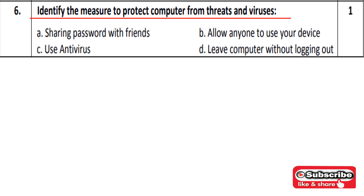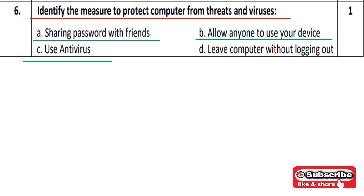Question 6: Identify the measures to protect a computer from threats. Option A is sharing your password with friends — if we share our password, we cannot protect our computer, so option A is wrong. We should not share our password; we keep it to ourselves to save our computer from unauthorized access. Option B is allowing anyone to use your device — we cannot allow that. Option C is using antivirus — obviously this is correct, because we can use antivirus on our PC to protect our computer from threats and viruses.